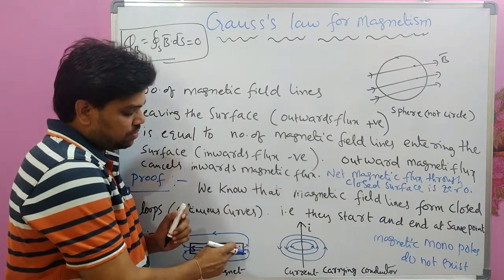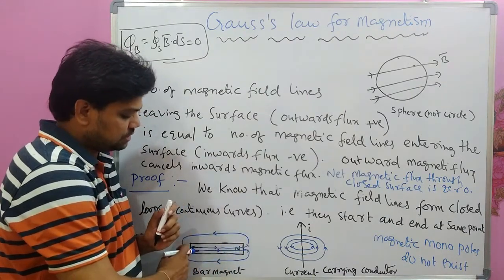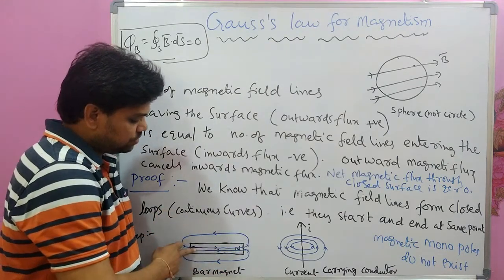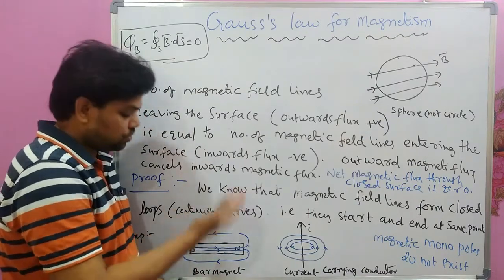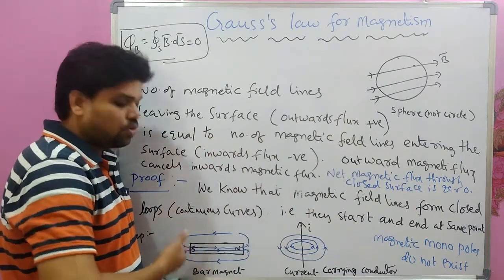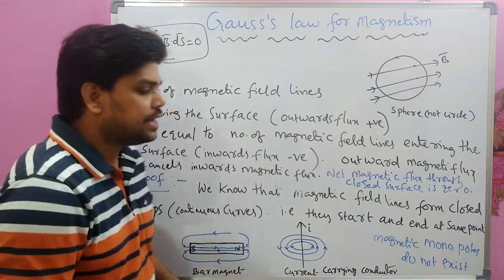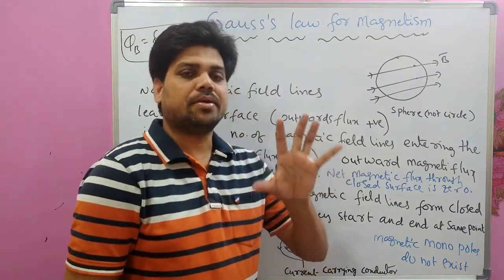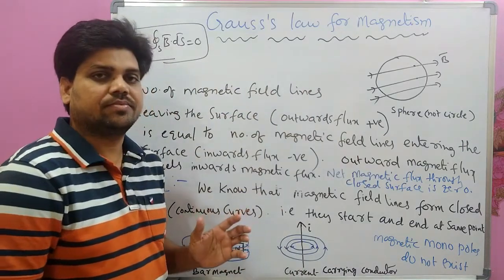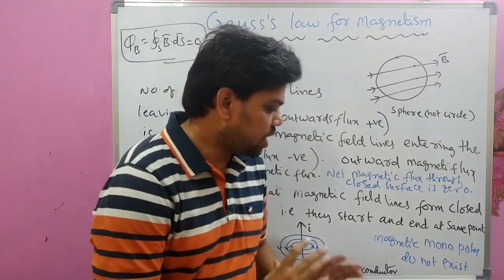For example, from a North Pole the field lines go out and enter the South Pole outside the magnet — North to South outside, South to North inside. If there is only one pole with no other pole, it cannot form a closed loop. Therefore, magnets are always available as unlike pairs of poles — North and South. Magnetic monopoles do not exist.